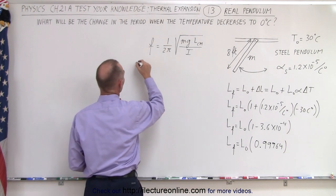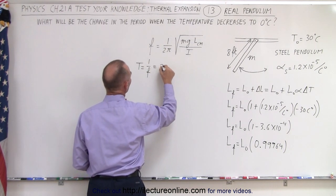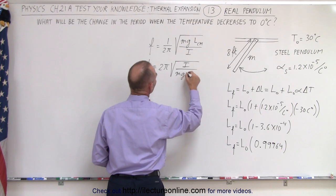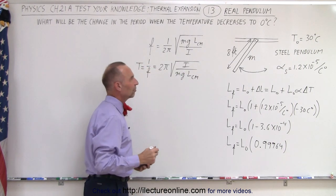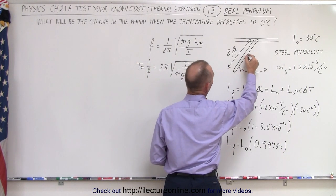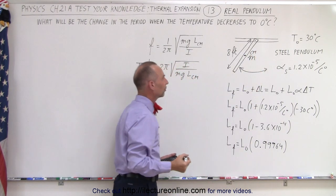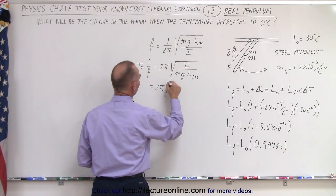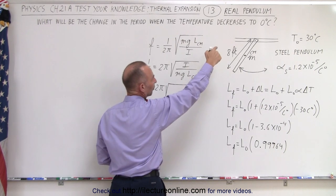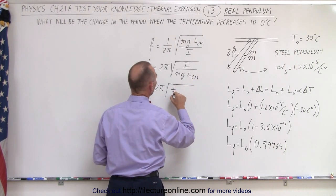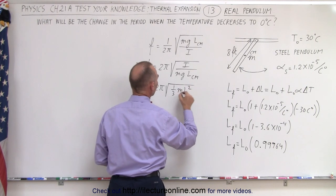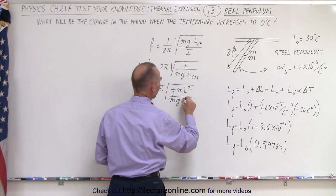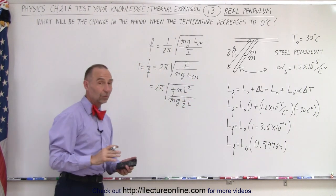The period, which is equal to 1 over the frequency, is therefore 2π times the square root of the moment of inertia divided by mg times the distance to the center of mass. For a bar like that, the center of mass would be at the halfway point. Plugging in what we know: the moment of inertia of a bar swinging about its end is one-third mass times the length squared, divided by mg times the length to the center of mass, which is half the length.